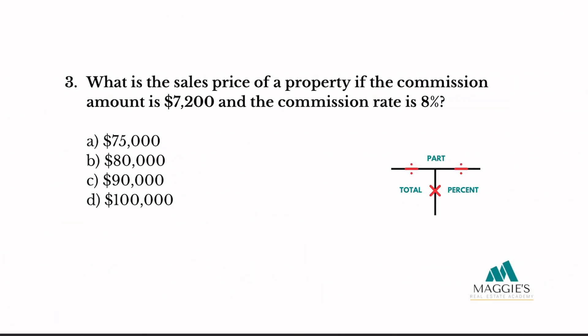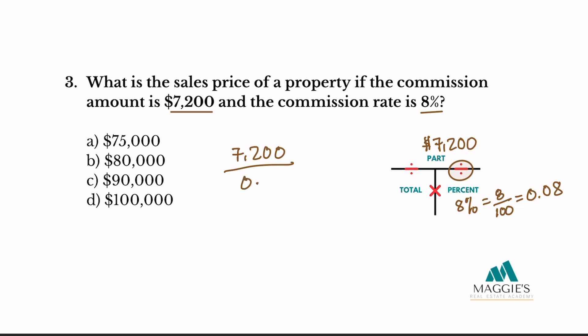Problem 3: What is the sales price of a property if the commission amount is $7,200 and the commission rate is 8%? Here we switch things up. The commission amount of $7,200 is just a part of the total, so it goes on top. The 8% commission rate goes in the right column — convert to a decimal: 0.08. According to the T-chart, we divide: 7,200 ÷ 0.08 = $90,000. The answer is C.